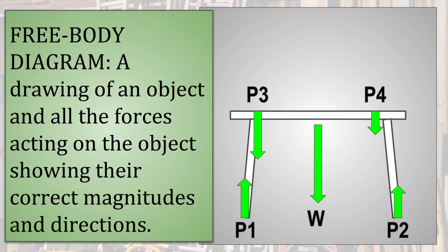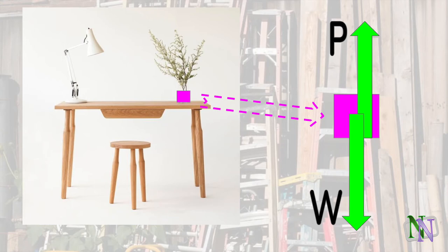The free body diagram of the flowers would look like this. There are two forces on the flowers, their weight, which is the pull of the Earth on the flowers, and the push of the table on the flowers.